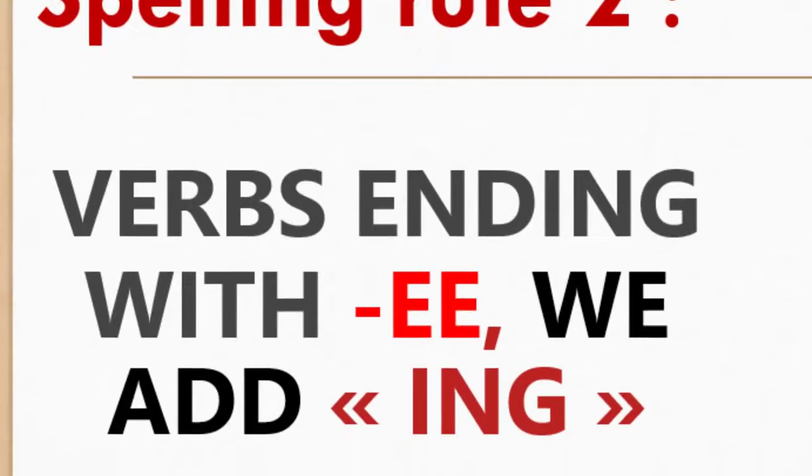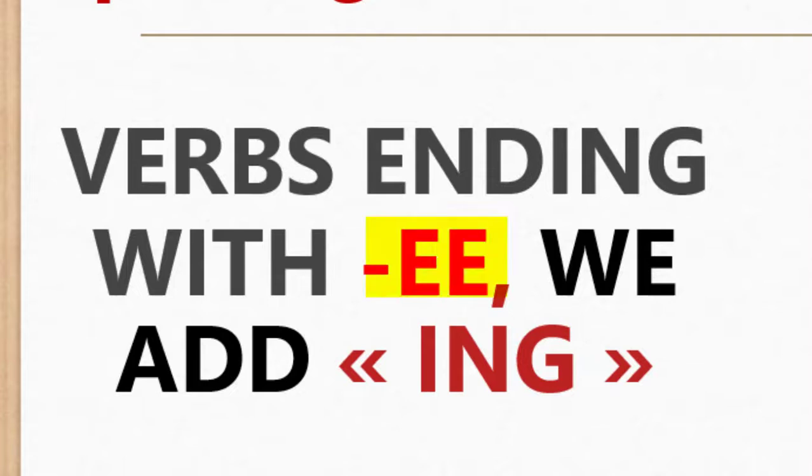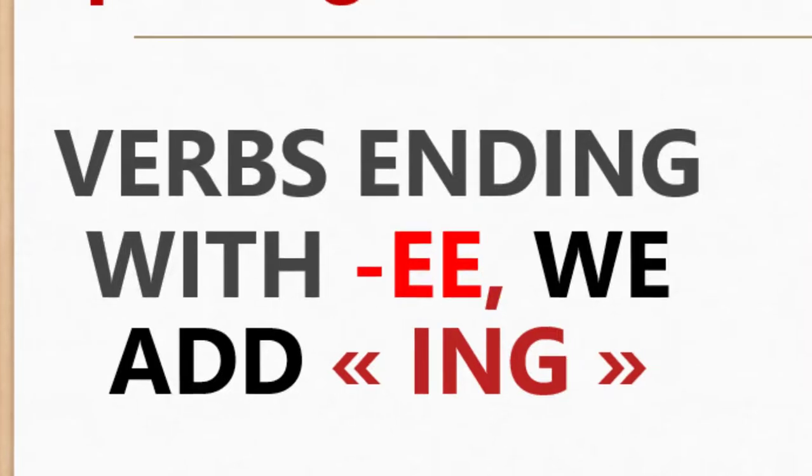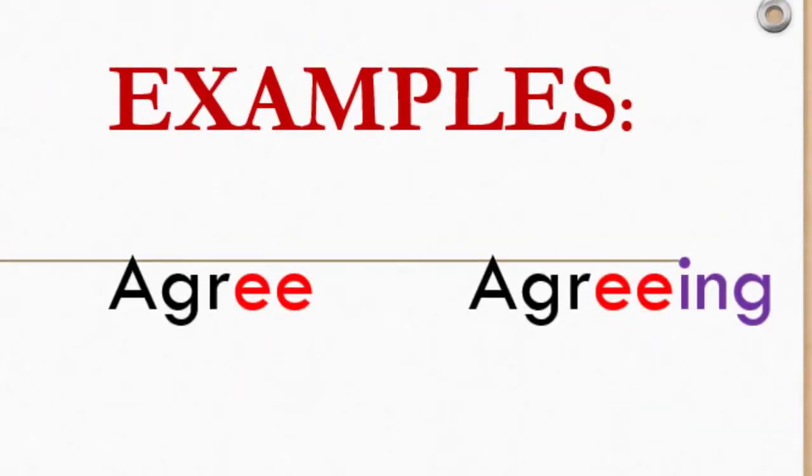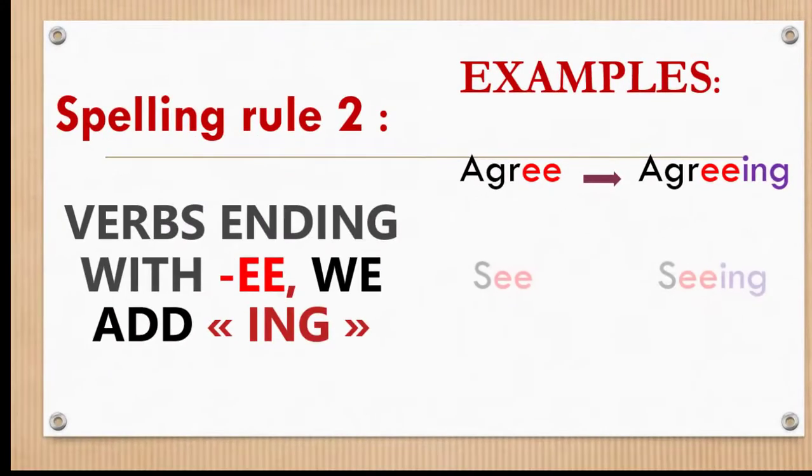Spelling rule two: verbs ending with double e, we just add ing. For example: agree, agreeing; see, seeing.